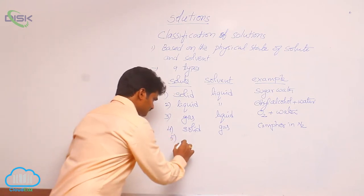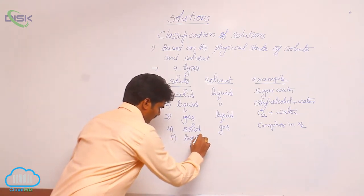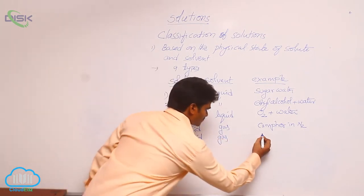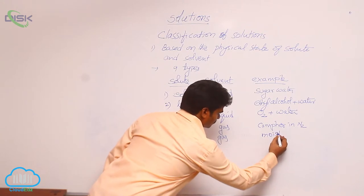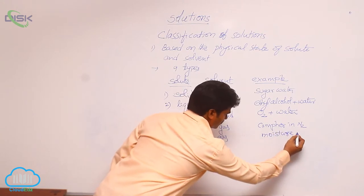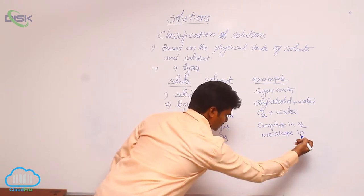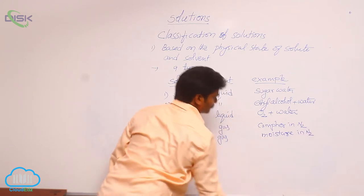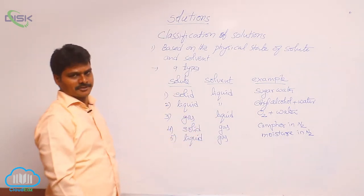Fifth one, liquid in gas. For this, moisture in air. Moisture in air. Air is a mixture of several components. Let us consider here a binary solution. That is why N2, because N2 is the major component of a solution.